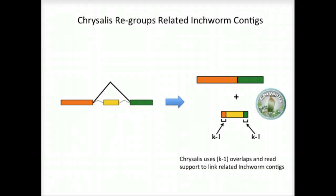The Chrysalis tool in the next step exploits these partial k-mers to regroup related contigs. If reads exist that support the junction at the k-1 overlaps, then Chrysalis will cluster the Inchworm contigs together.